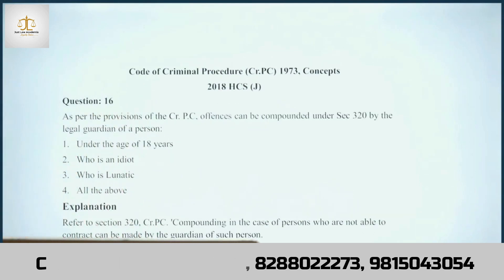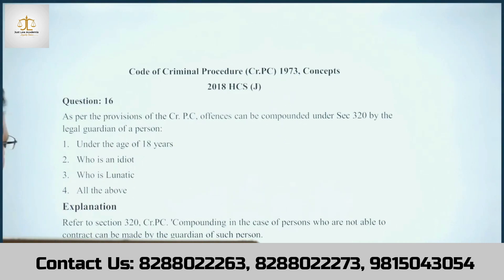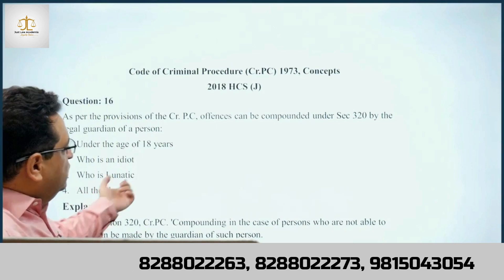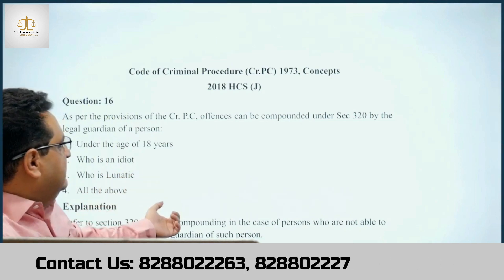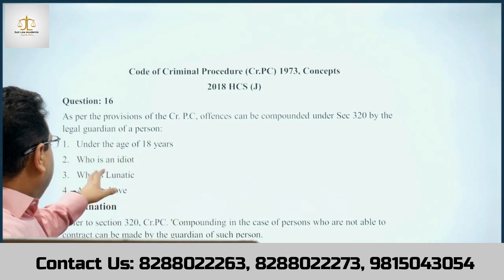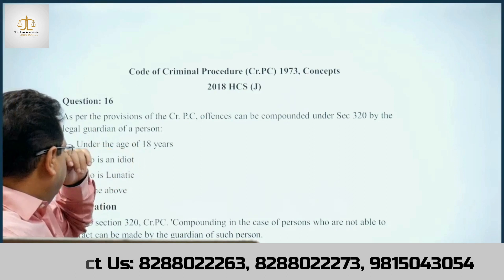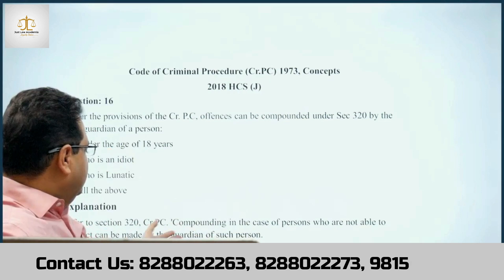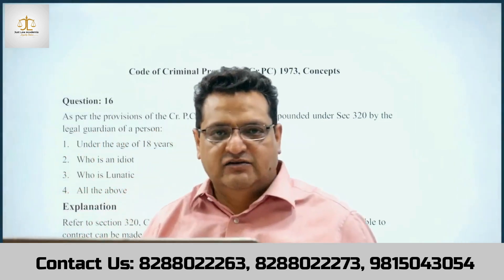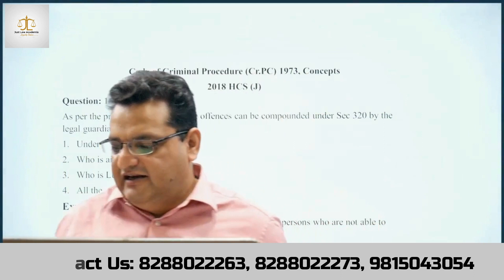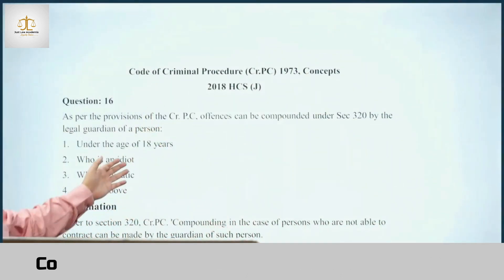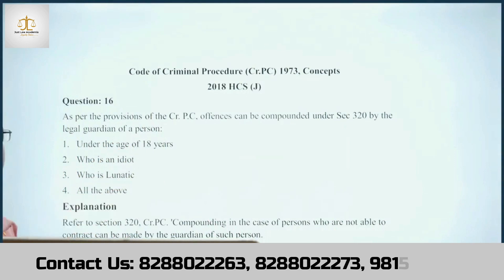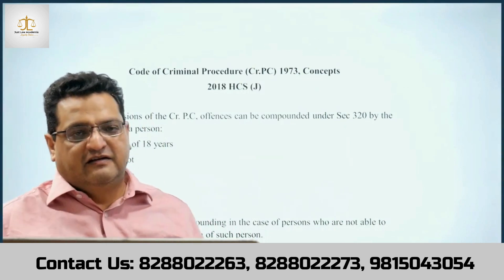As per CRPC Section 325, offenses can be compounded by the legal guardian of a person. If the aggrieved or complainant party is a minor, the legal guardian can compound the offense. Under the age of 18, or if the person is an idiot or a lunatic, the legal guardian is competent. Compounding can take place regarding compoundable offenses with the legal guardian of persons not legally capable — whether due to minority, idiocy, or lunacy. In such cases, the legal guardian is competent to enter into a compromise.